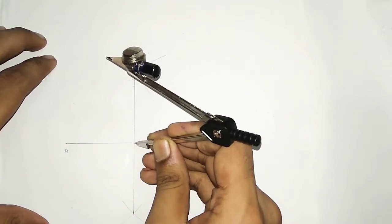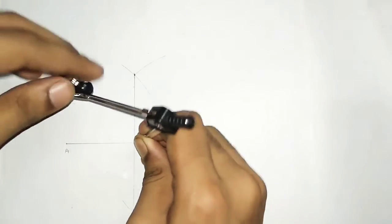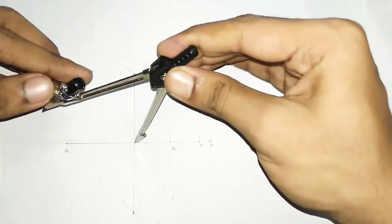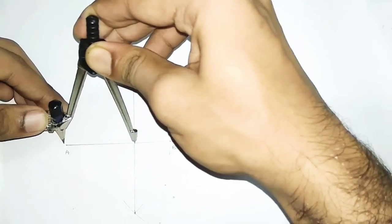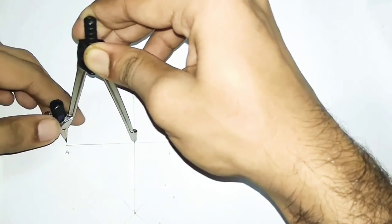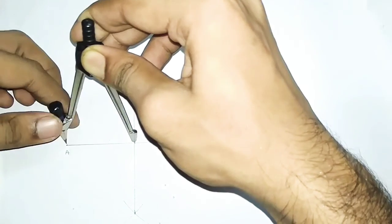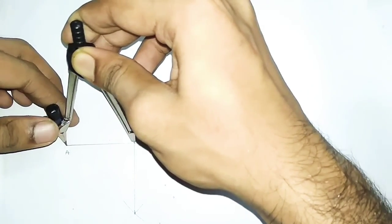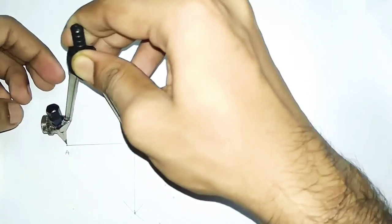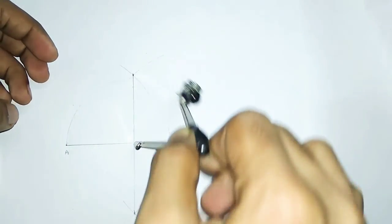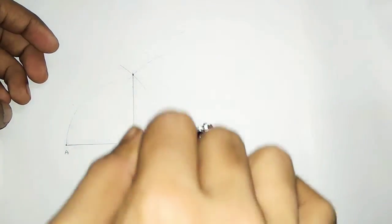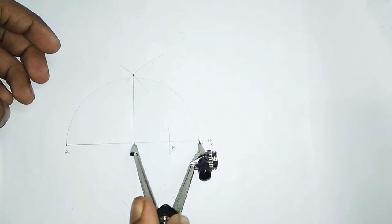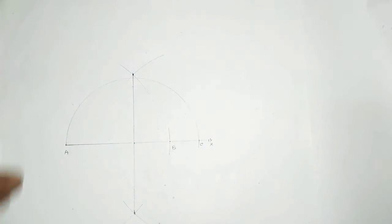Now you have to draw a semicircle by taking the midpoint of AC as the center and the half-length of AC as the radius. Take the measurement very carefully and draw the semicircle.